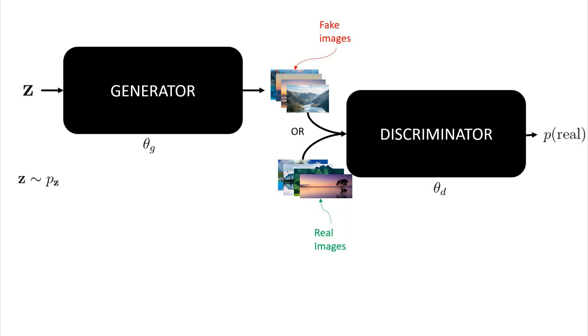Initially, the generator will produce garbage that looks nothing like a landscape image. And the discriminator will be able to easily distinguish between real and generated images.